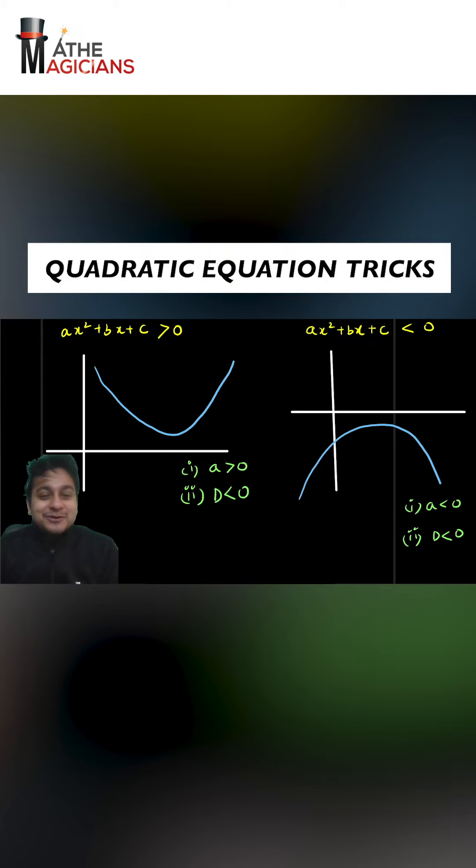So guys, in the question, let's suppose we have been given that this parabola is greater than zero. The whole parabola lies above the x axis, so obviously that can happen only if it's an upward facing parabola, so that means our a will be greater than zero.